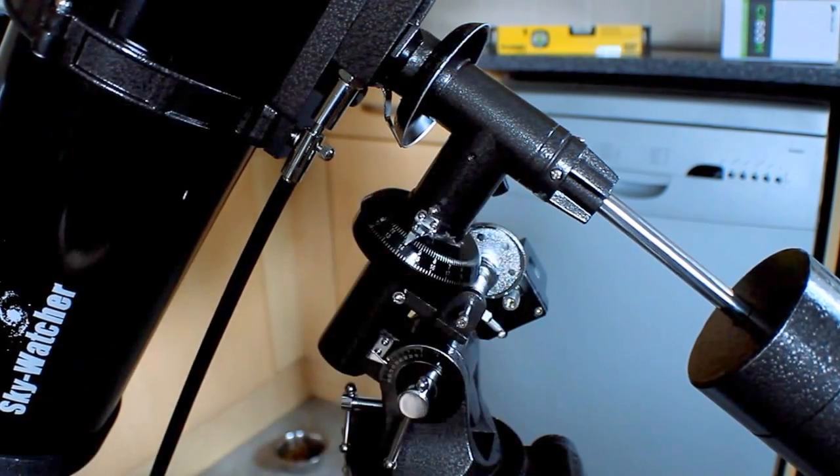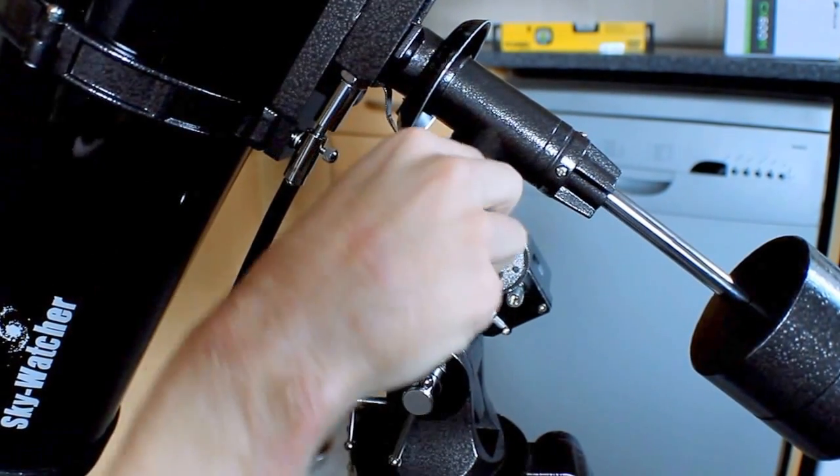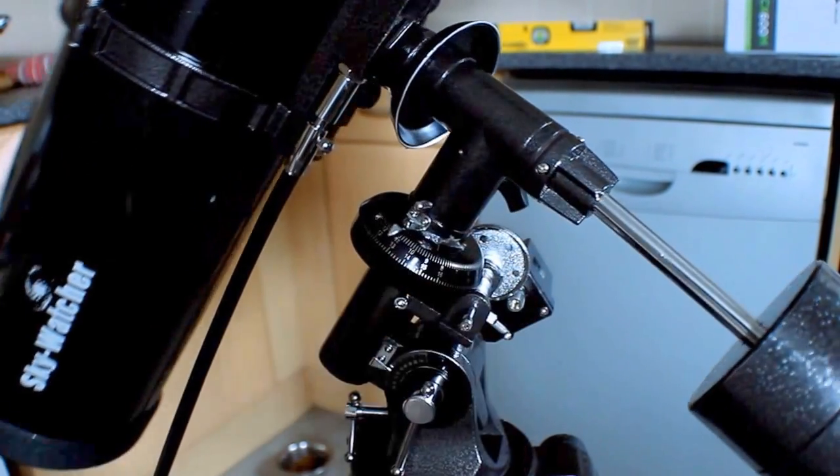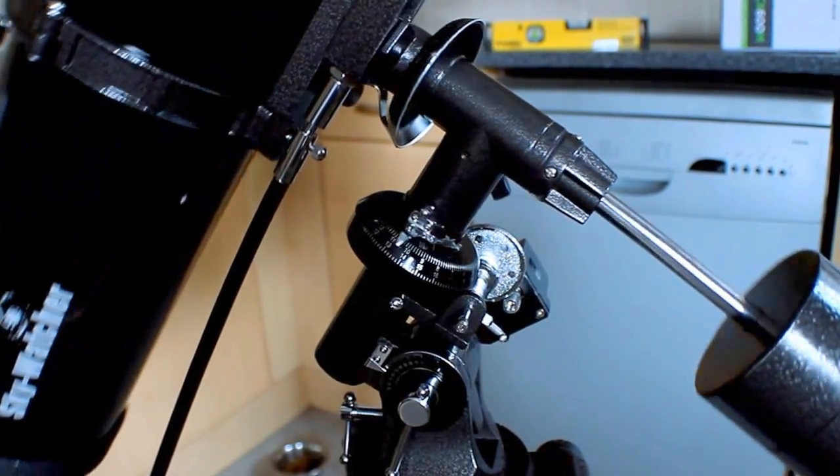And then you tighten the screw up, so it tracks it, and the right ascension moves with it. If you loosen the right ascension, if you want to find an object, you loosen it up, and then you can slide it, and the right ascension stays in place so you can find it correctly.